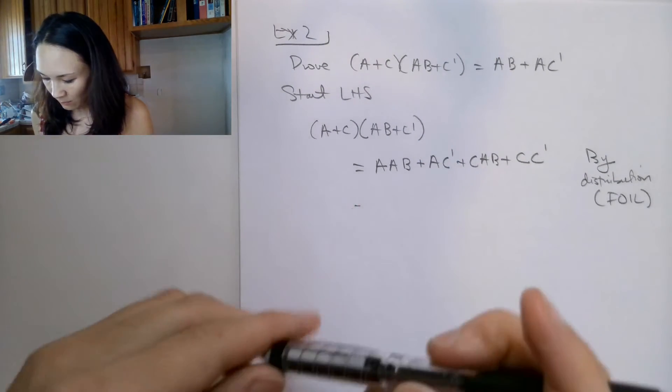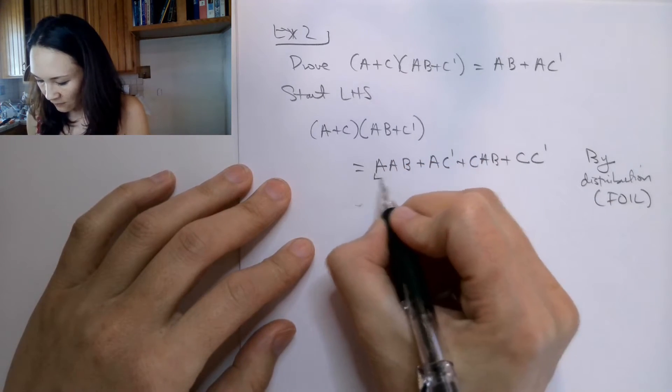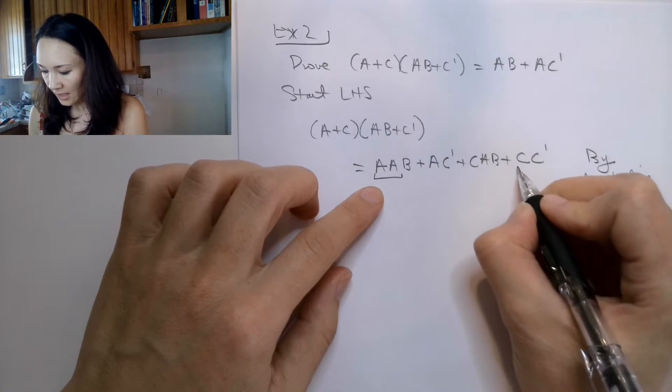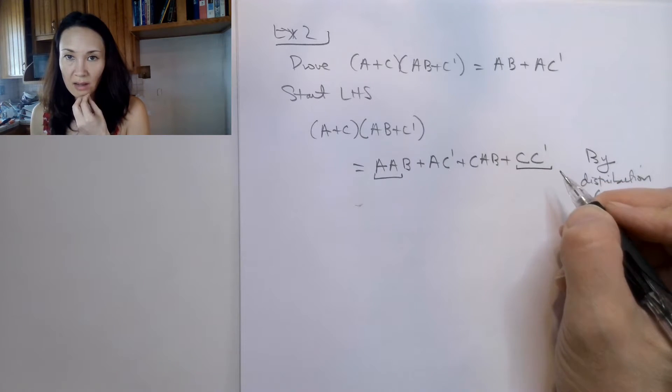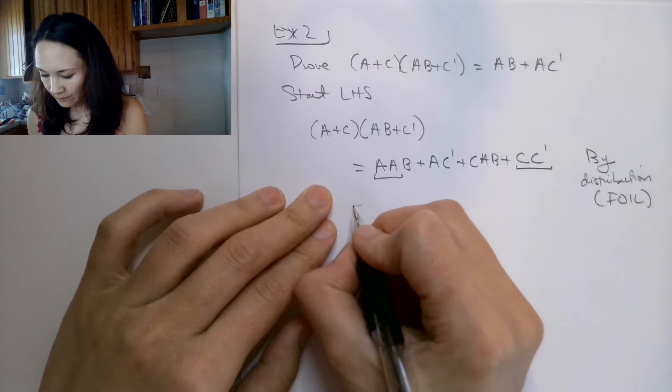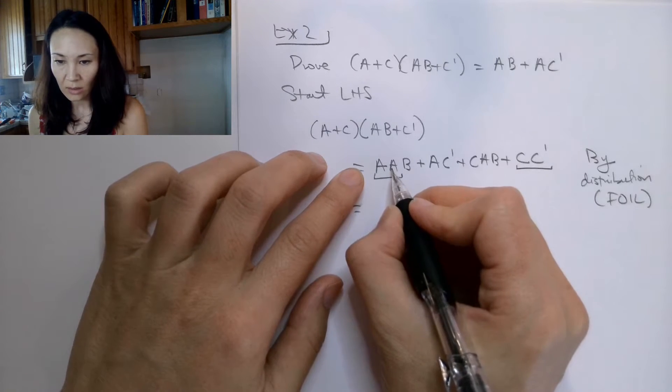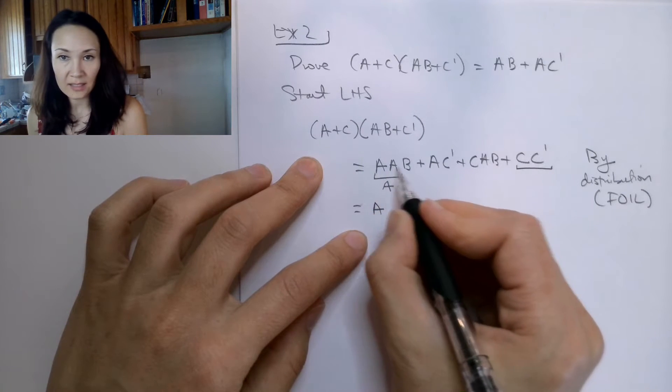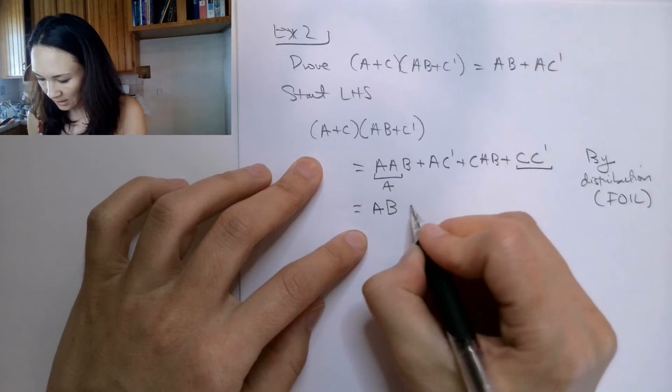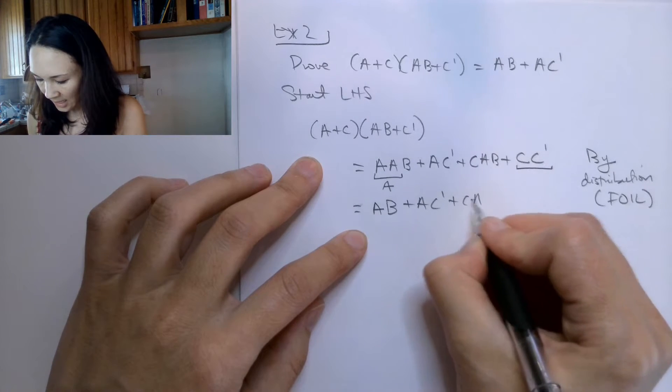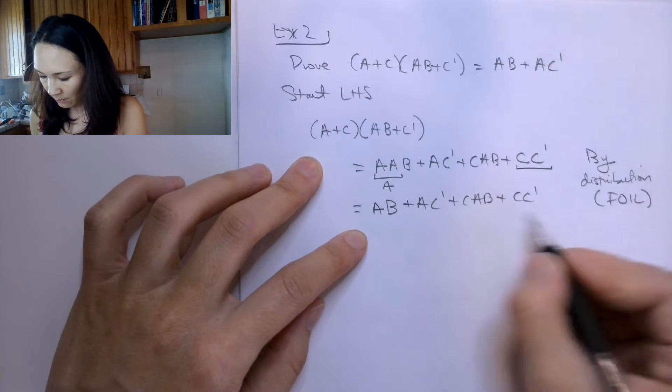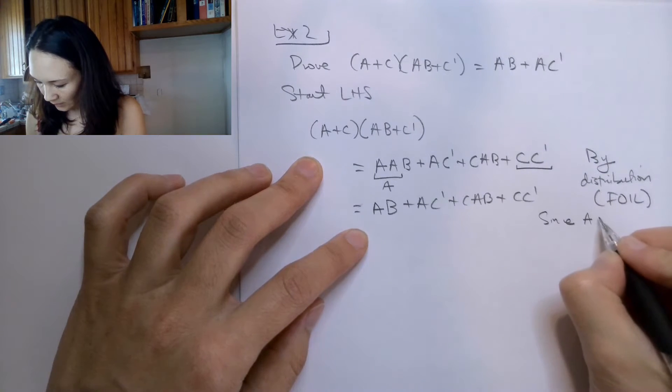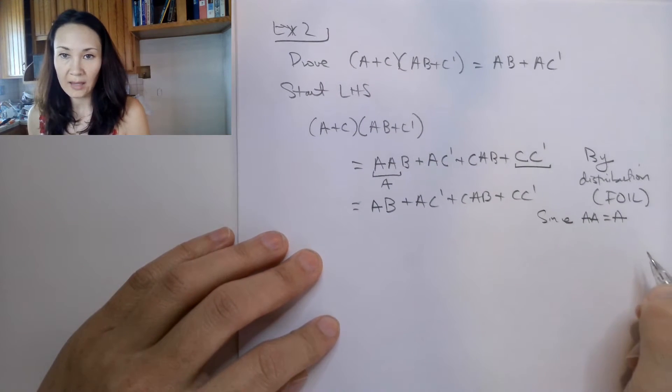So then, what can I say? I have that, I basically have two duplicates, right? So A anded with A, I'll be able to simplify that. And here I have C anded with C naught. So let me simplify this thing first. I can say that this thing here is just equal to A. So I'm going to rewrite this equation with just one A instead of both of these A's anded together. So this is A, B or A, C naught or C, A, B or C, C naught. And my justification of this is, since A anded with A is just equal to A.